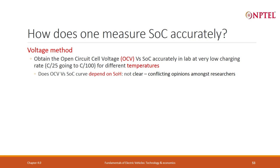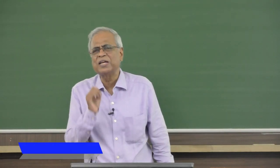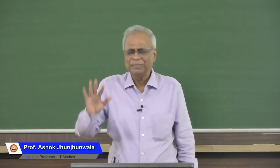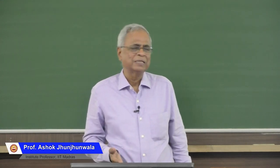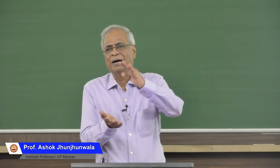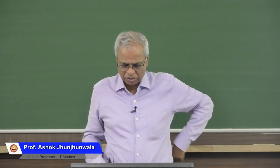How does one measure SOC accurately? The voltage method can be applied if you use the open circuit voltage, that means zero current. Generally when you use that, you use a current between C/25 to C/100 — a very slow rate of charging — then you get nearly OCV and you use that as a curve which gives you the relationship.